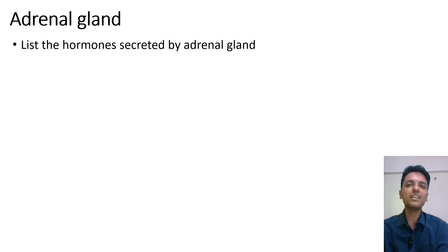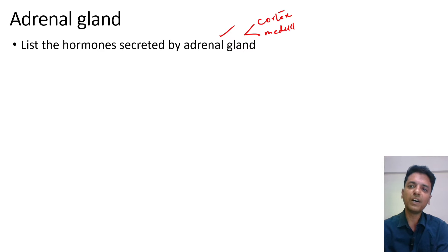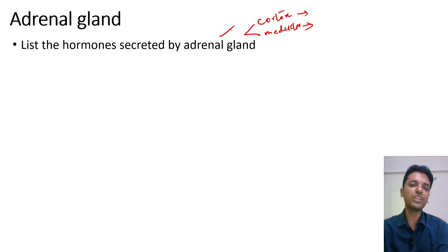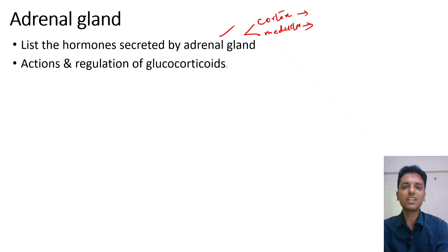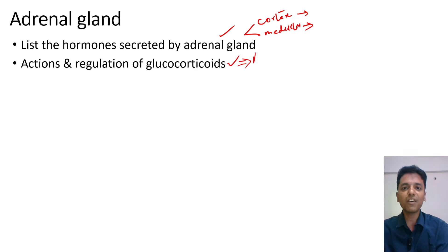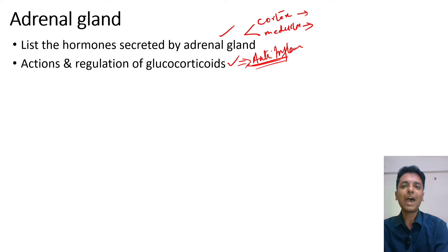Next is the adrenal gland. If asked to list its hormones, write hormones from both the cortex — from all three zones — and the medulla. Very important are the actions and regulation of glucocorticoids; remember each one of them. Question papers have specifically asked about the anti-inflammatory action of glucocorticoids — how glucocorticoids produce their anti-inflammatory effect. Sometimes the anti-allergic action is also asked, but the anti-inflammatory action is a key short note topic.